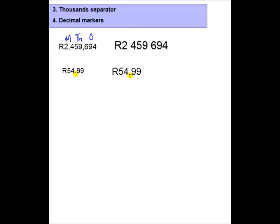What does this actually mean? Well, it tells you that the whole is separated from the fraction. So the decimal comma separates the whole and the fraction part of the number. So here it is a whole 54 rand, and here it is 99 cents or part of one rand.